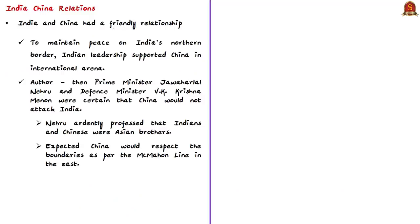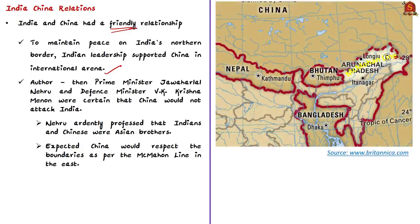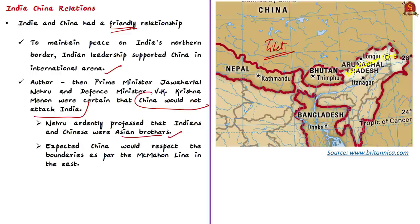At that time, India and China had a friendly relationship, and to maintain peace on India's northern border, India supported China in the international arena — even accepting Chinese sovereignty over Tibet. Because of this, Prime Minister Nehru and Defence Minister Menon were very confident that China would not attack India. Nehru professed that Indians and Chinese were Asian brothers and expected China to respect the McMahon Line as the eastern border.